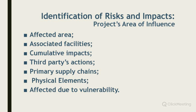Associated facilities are facilities that are not funded as part of the project and would not have been constructed or expanded if the project did not exist in the first place, and without which the project would not be viable — such as railway lines, roads, or power plants and transmission lines. For instance, in Nigeria you have to connect to the national grid; if such facilities are not in place it will be complicated for the project to proceed. So associated facilities are also part of the area of influence.